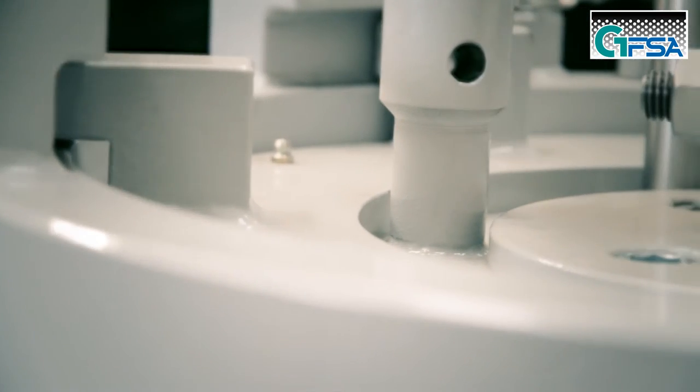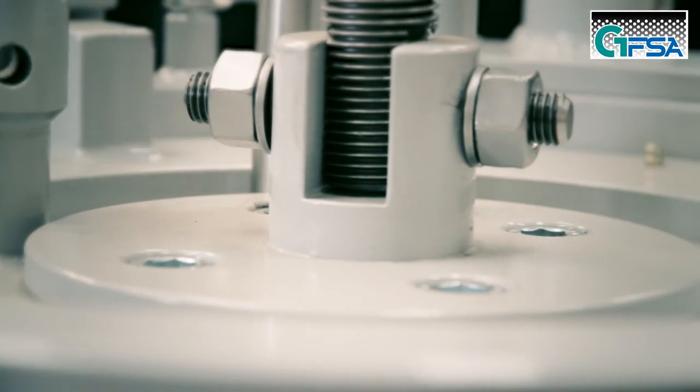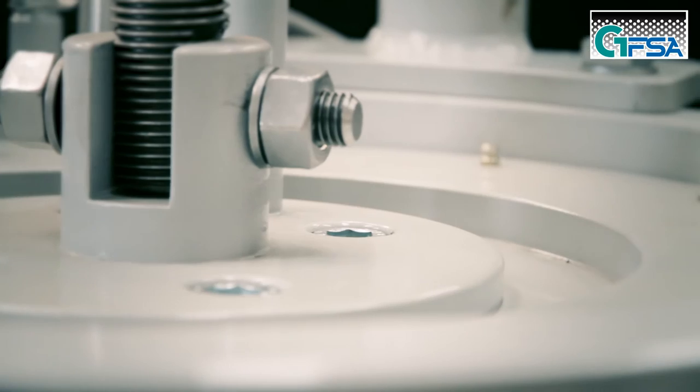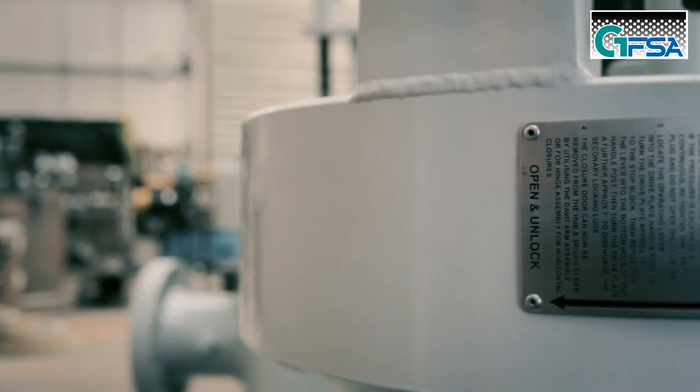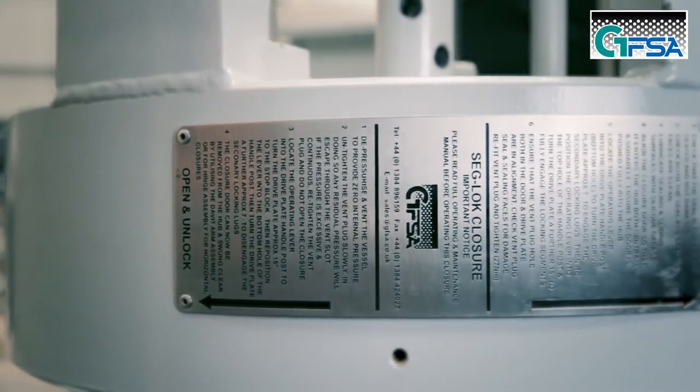Once all safety precautions have been taken to ensure that any residual pressure is vented, the closure door may be opened. Opening and closing instructions are detailed on the stainless steel nameplate attached to each closure hub.